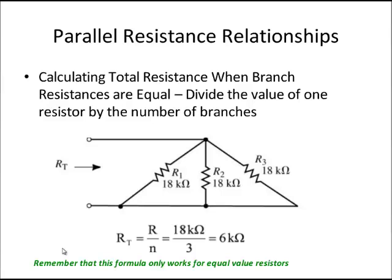In this example all resistors are the same value. Although we could use RT equals 1 divided by (1/R1 plus 1/R2 plus 1/R3), because all three values are equal we can use the simpler formula RT equals R divided by N, where N equals the number of equal-value resistors. In this case, 18 kilohms divided by 3 equals 6 kilohms. You can verify this using the standard formula.